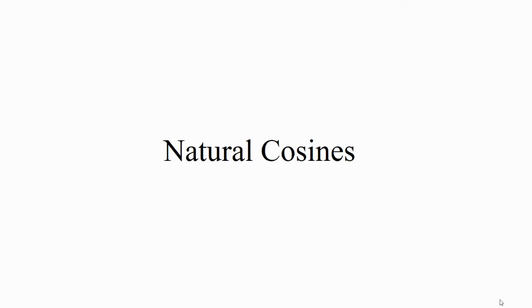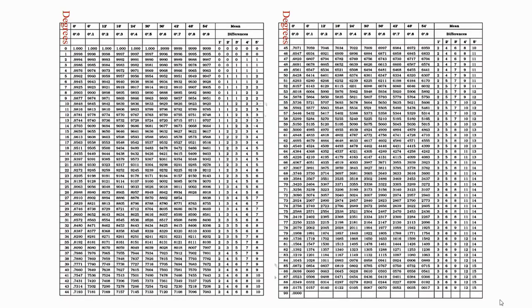Welcome back students. Let's discuss the natural cosine table. Here is the natural cosine table. The pattern of a natural cosine table is the same as that of a natural sine table. The very first column of the table represents angle in degree. This table is used to find the value for cosine of a given angle.